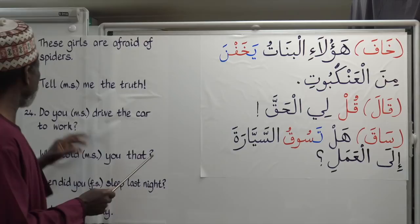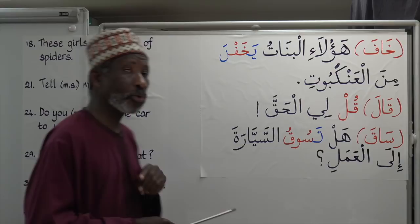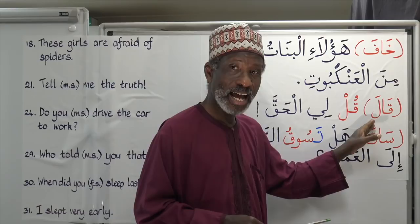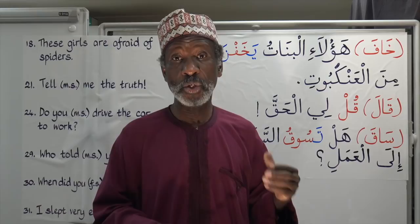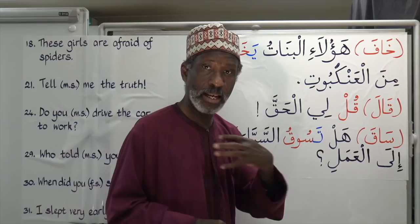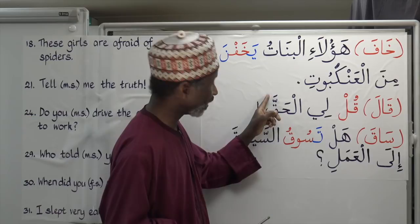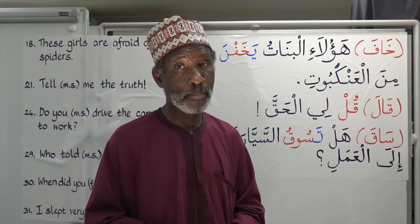Next, exercise 12 number 21: 'Tell me the truth' — speaking to a singular masculine. We're using the verb Qala, the verb to say, meaning 'he said.' The imperative becomes Qul, in line with what we explained when doing the conjugation of the hollow verbs. So Qala becomes Qul — 'say' or 'tell.' Qul li al-haqqa — 'tell me the truth.' Al-haqq here has fathah because it is the object, the accusative ending, which we covered in book 3 of the Gateway to Arabic.